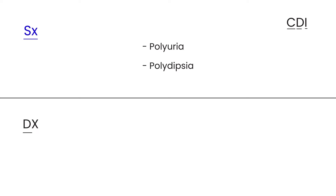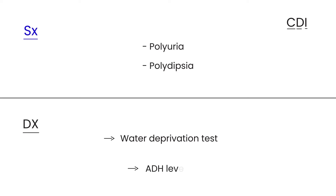So how do you diagnose CDI? There are two main diagnostic tests. The first is a water deprivation test — in a controlled environment, you deprive the patient of water for a few hours and take measurements of their urine and plasma osmolarity. The second is to measure ADH levels directly, although this is not usually necessary because the water deprivation test is accurate and conclusive enough on its own.